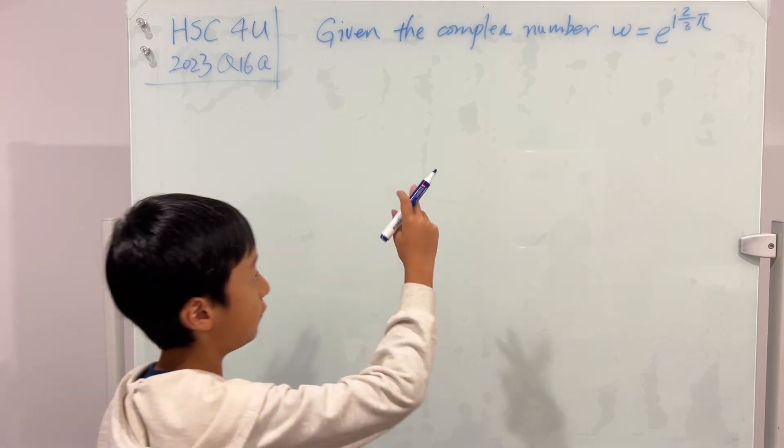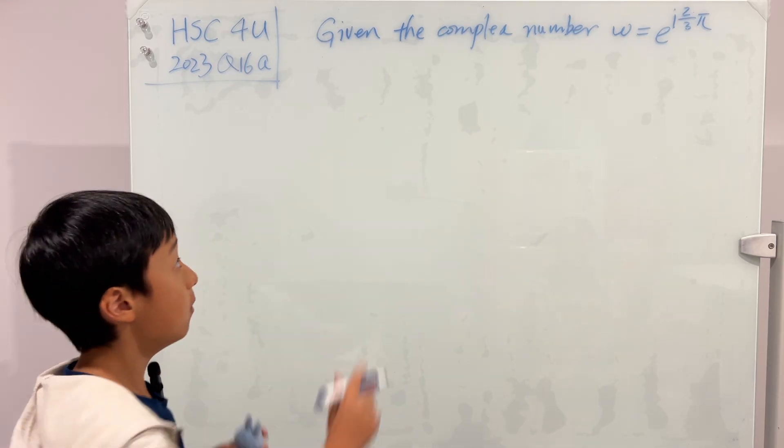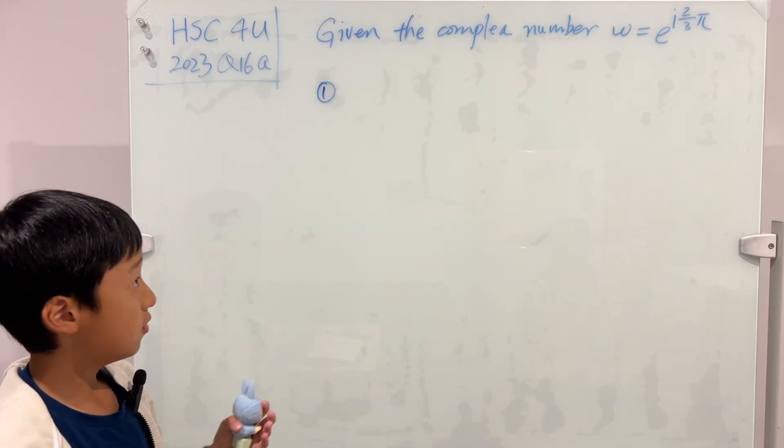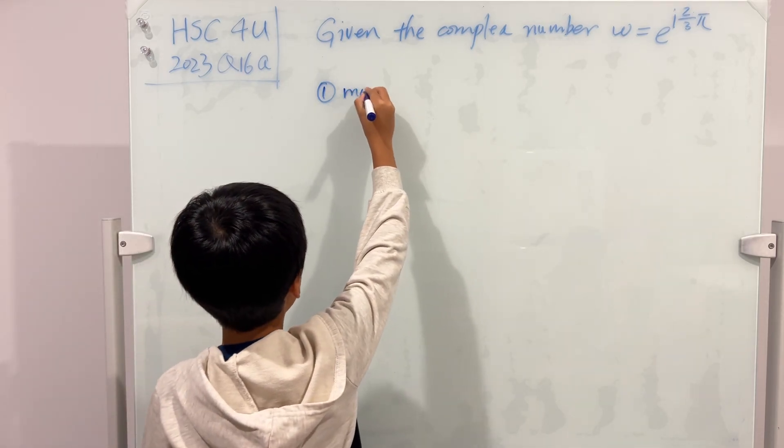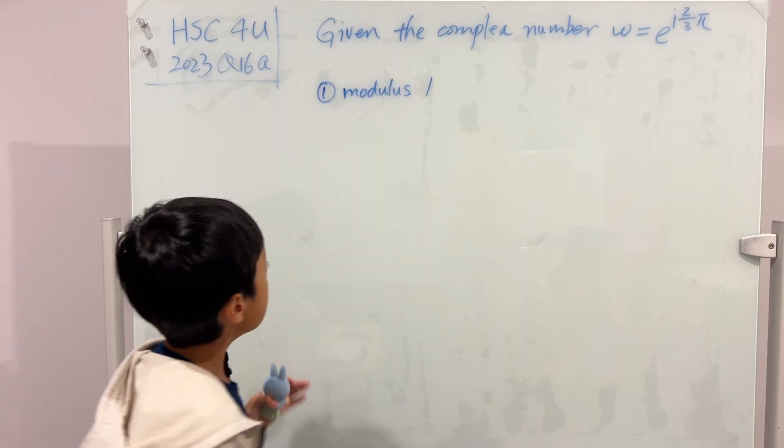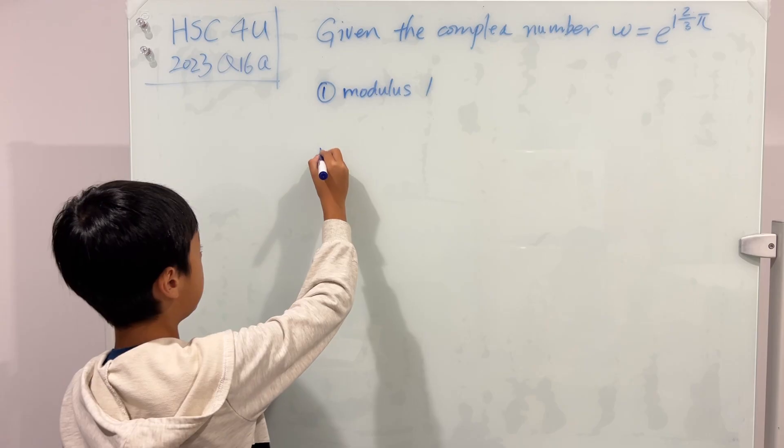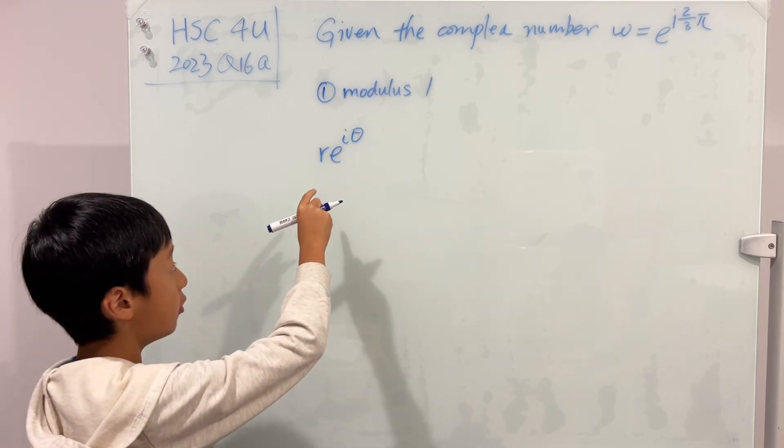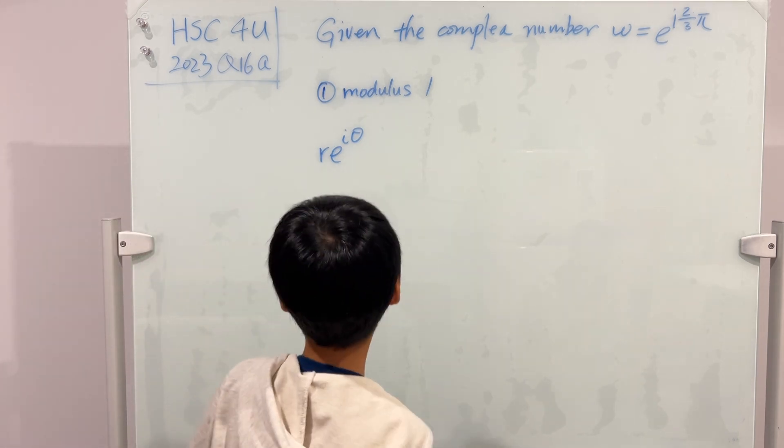So let's first observe w. What is the first thing you can notice? Well, the first thing that I can notice is that w, or that complex number, has a modulus of 1, and I'll explain to you why. It has a modulus 1, because every complex number can be written into the form r e^(iθ). And here the r is 1, so the modulus is 1. Simple as that.